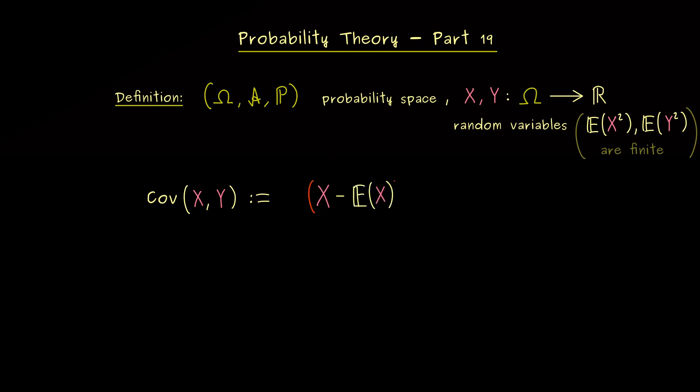And then we multiply this by the deviation of Y to its average. So the square, you know from the variance, is now a product of two different random variables. And then, finally, we simply take the expectation of this whole thing.